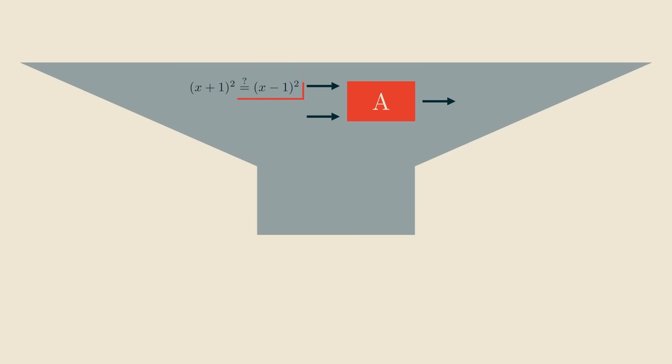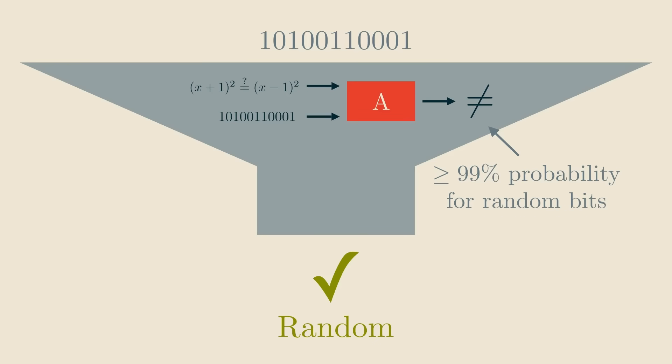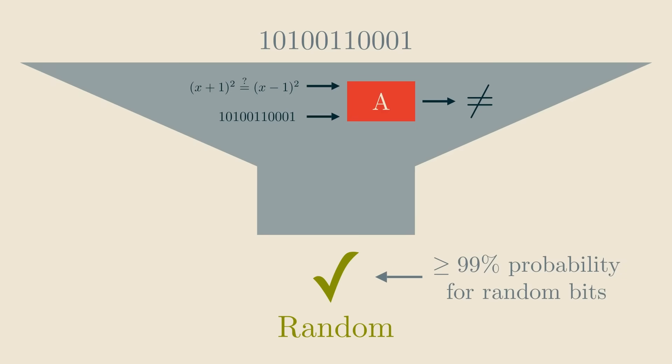Here's how. We simply run A on this concrete input using the supposedly random bits. If A correctly identifies the two polynomial expressions as being different, the statistical test answers that the bits are random. This makes sense because we know that for truly random bits, A is correct with at least 99% probability. So truly random bits are almost always classified correctly.